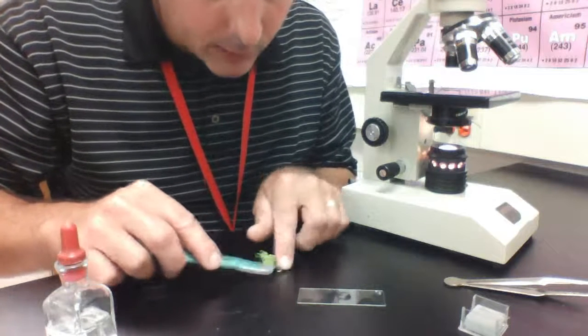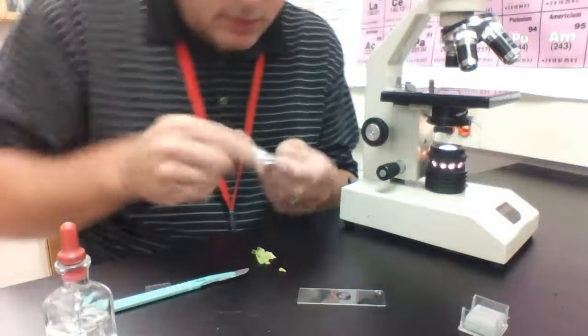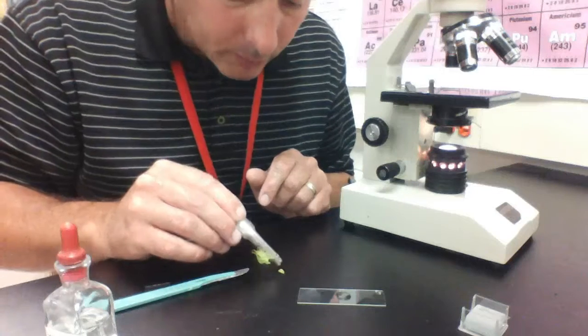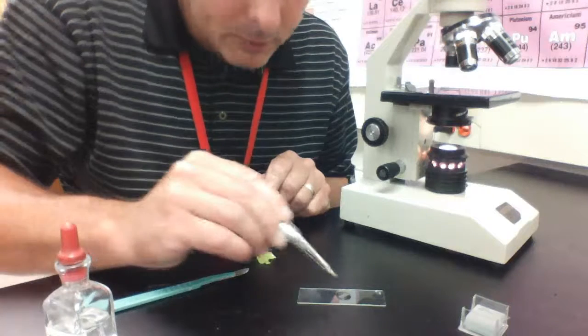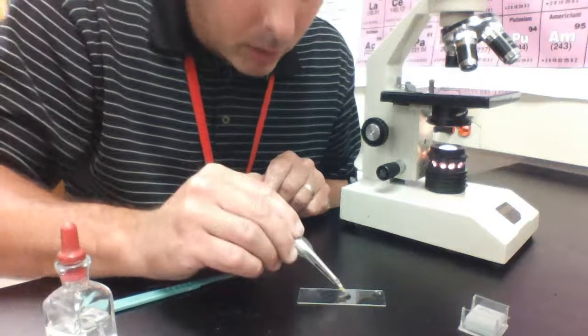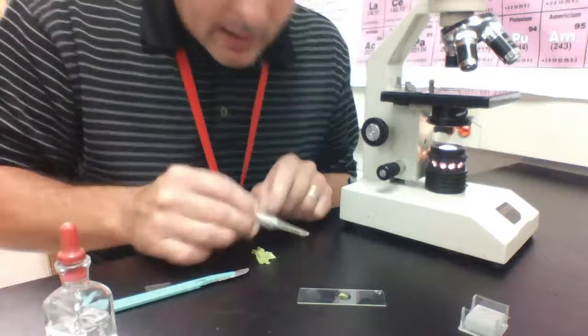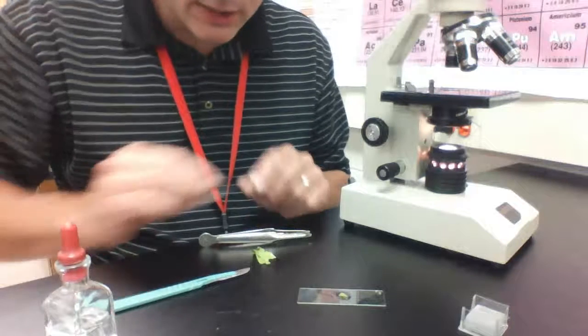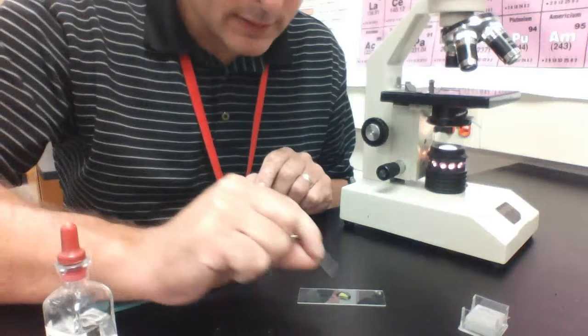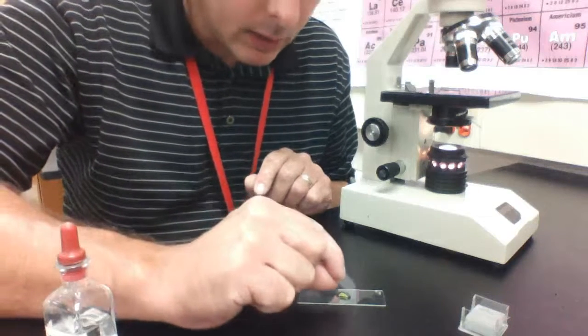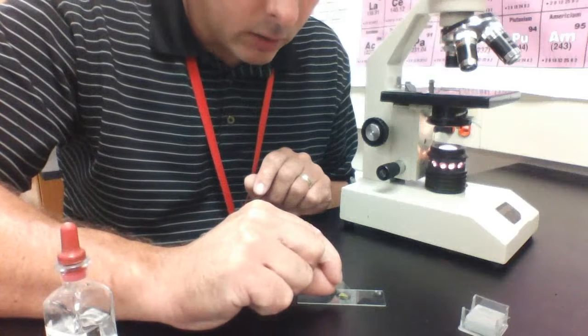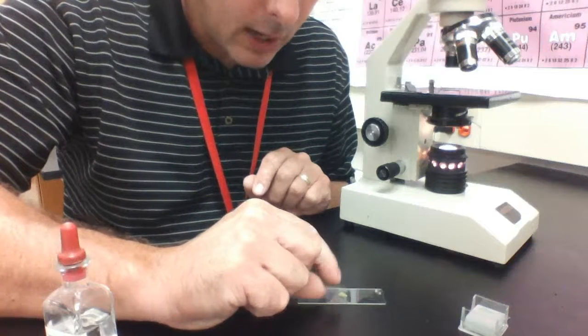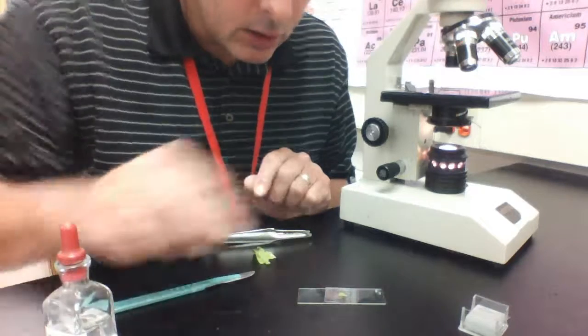So cut off a small piece, and instead of using your hand to try to handle something so small, use a forceps, place it right on top of the drop of water, and then again, you go through and take your cover slip and place it over the top of the specimen using the 45 degree angle until it hits the drop of water, and then drop it on there.